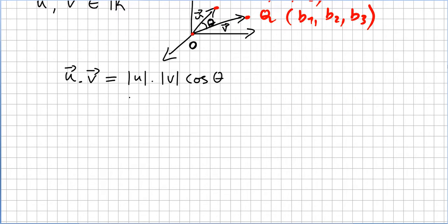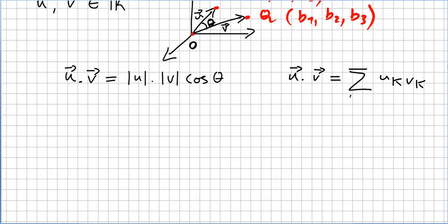Let us see whether this definition of the dot product agrees with our definition. Recall we defined the dot product as u · v equals the summation of u_k times v_k where k goes from 1 to n.